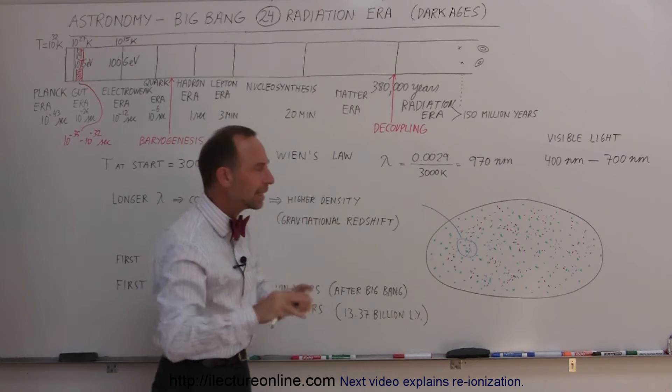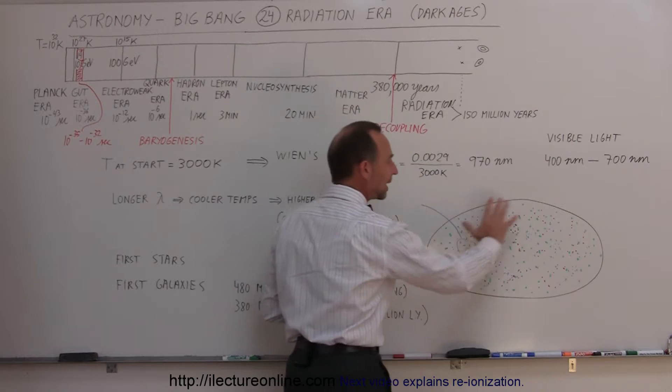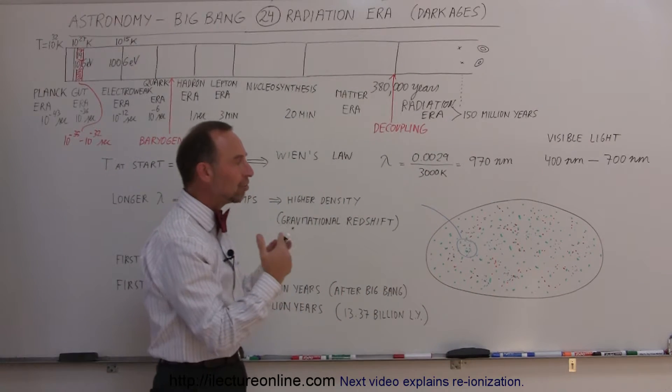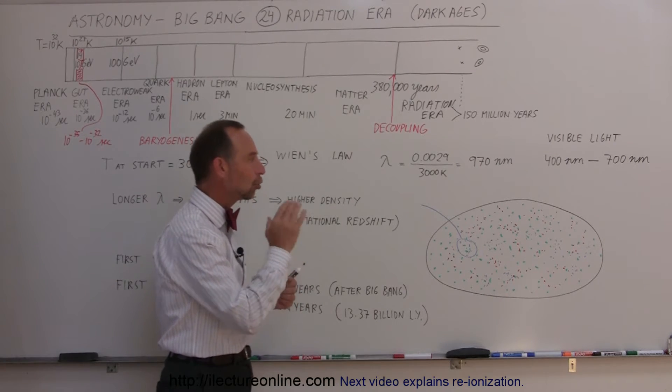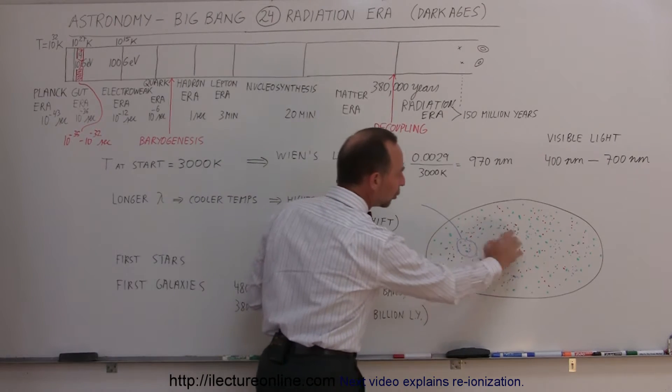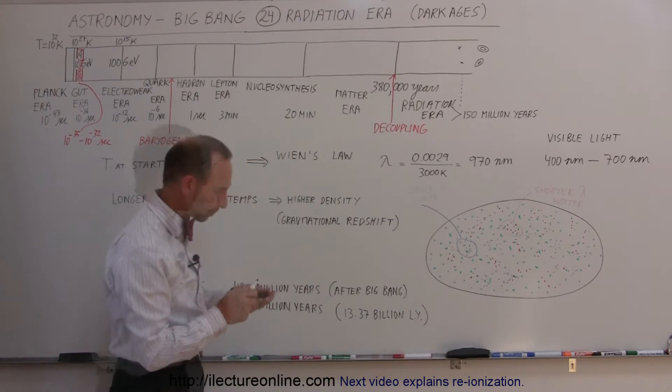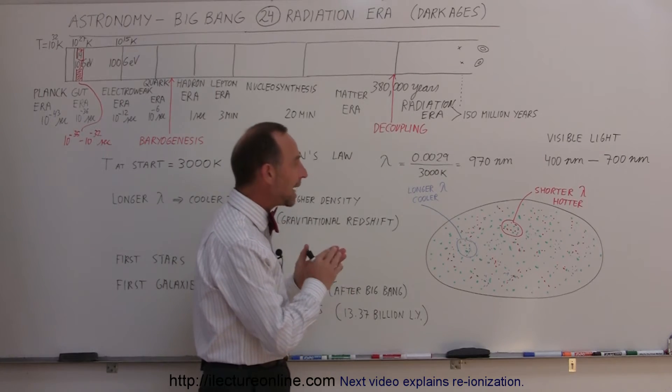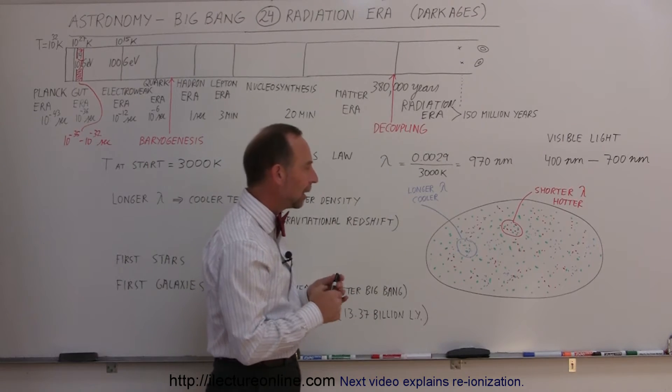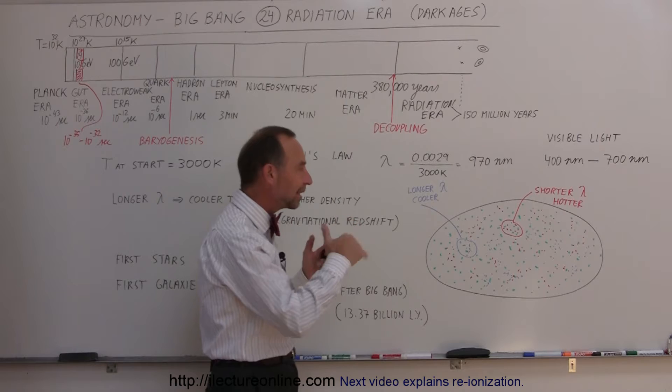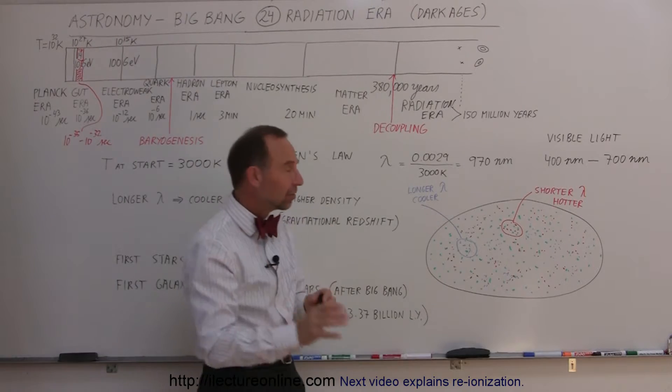The matter was not evenly distributed. When we take a picture of the radiation universe, we notice that some radiation had slightly longer wavelengths and some had slightly shorter wavelengths. The longer wavelengths are indicated in blue and the shorter wavelengths are indicated in red. Looking at the cosmic background radiation, we noticed slight fluctuations in wavelength and frequency.